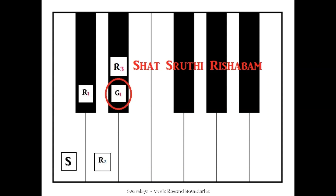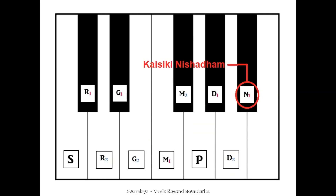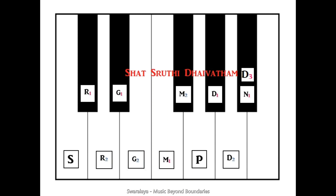As mentioned earlier, Rishabha and Daivatham have lots of things in common. The Vivadi of Daivatham is also named in the same pattern as Rishabha. We know Da 1 is Shuddha Daivatham and Da 2 is Chattu Shruti Daivatham. The next note after Da 2 is Ni 1, which is Kaisiki Nishadam. This Ni 1 is given another name and symbol: Da 3, Shat Shruti Daivatham.